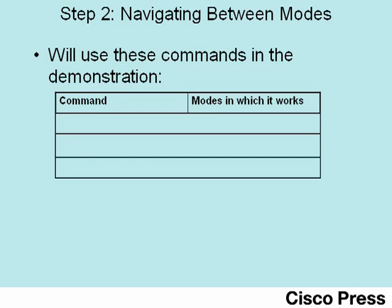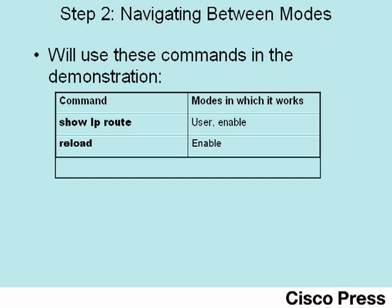As you go through your CCNA studies, you'll see lots of exec and configuration commands. This table shows three different commands we'll use in step two. In particular, there's the show ip route command — an exec command available in both user mode and enable mode, because it cannot harm the operation of the router. We'll also look at the reload command, which is only available in enable mode because it can cause the router to reboot. Finally, we'll look at the hostname configuration command, which changes the router's configuration.